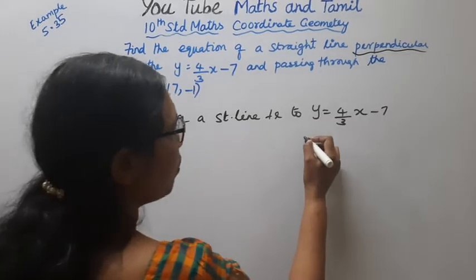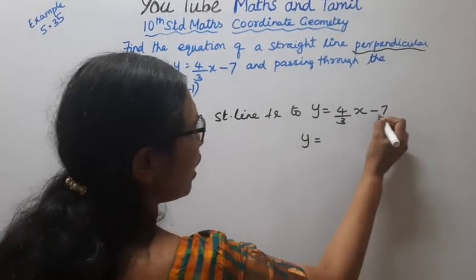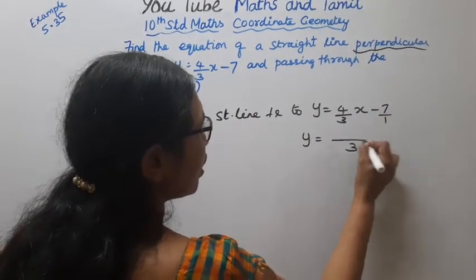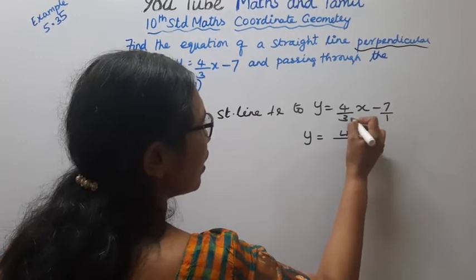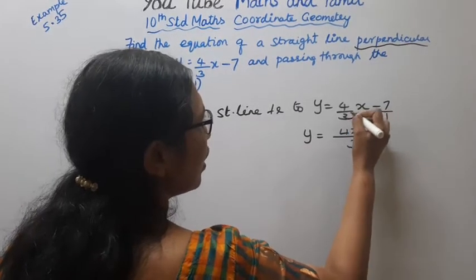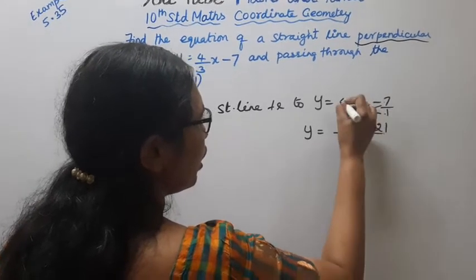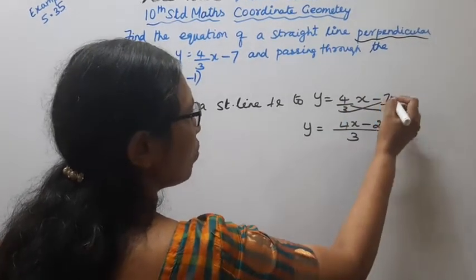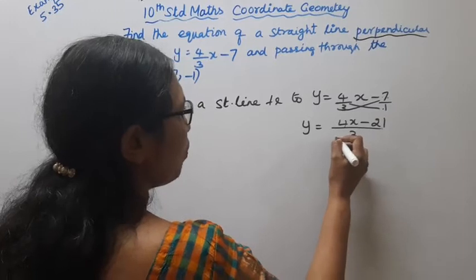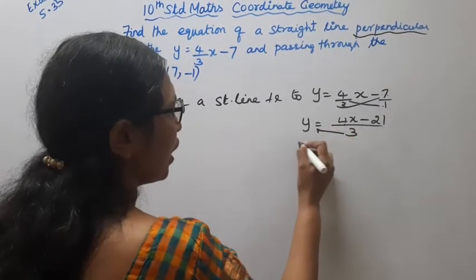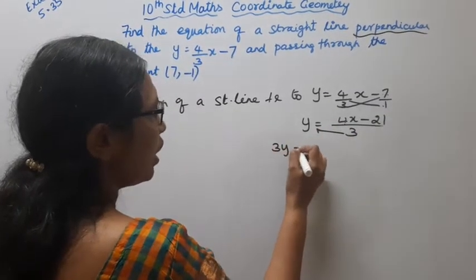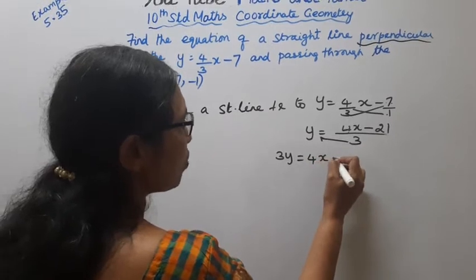Y equal to and the LCM will come, 3 LCM will come. 4x, 3 into 7 minus 21. 1 into 4x, 4x, 3 into minus 7 minus 21. This 3 is multiply, so 3y equal to 4x minus 21.